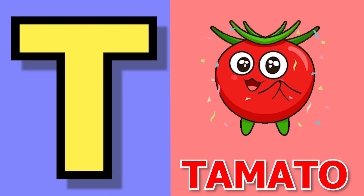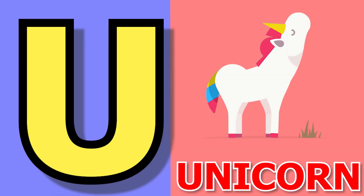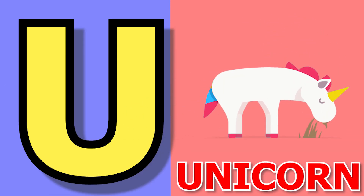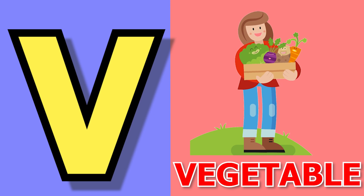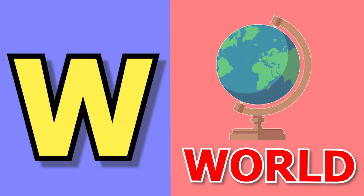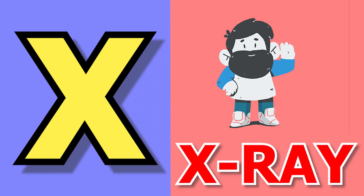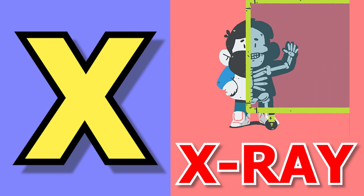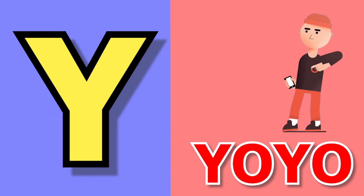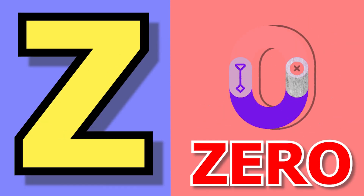T for tomato, U for unicorn, V for vegetable, W for wild, X for x-ray, Y for yo-yo, Z for zero.